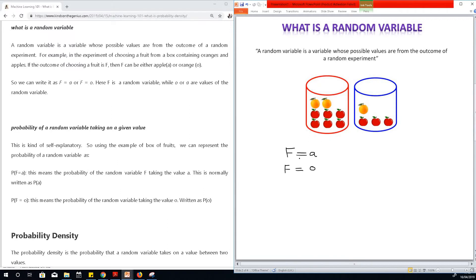So in this case, f is a random variable and a is a value of the random variable. So this is how a random variable works.